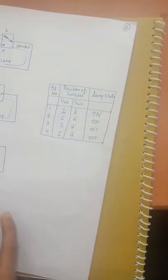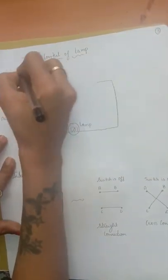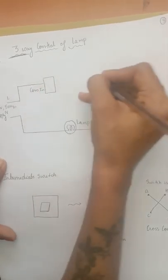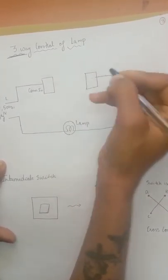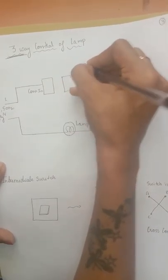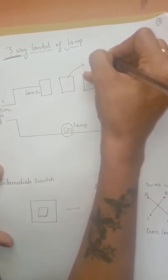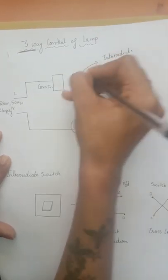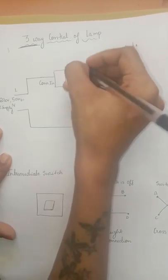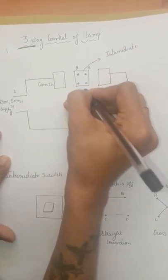Now we will see how a three-way control switch looks like. As the name says, it is three-way control — that is, one lamp is controlled by three switches. I draw three switches, and the middle switch is called the intermediate switch. It has four terminals, which I will name A, B, C, and D.